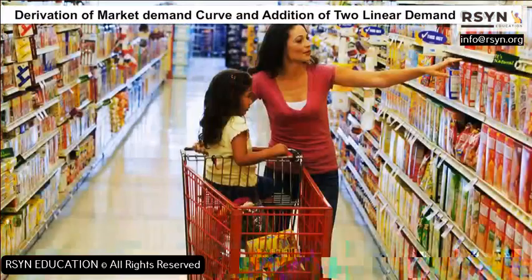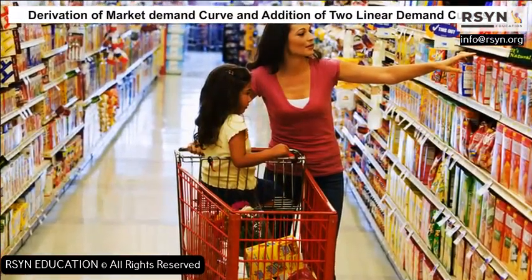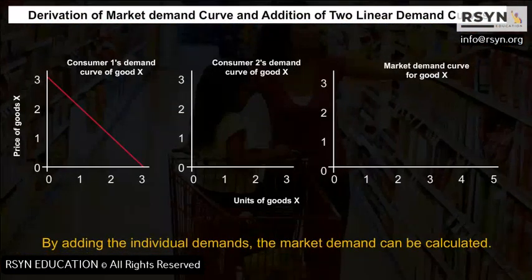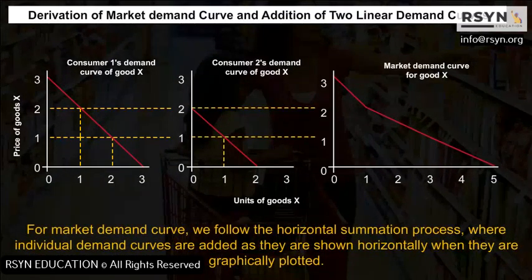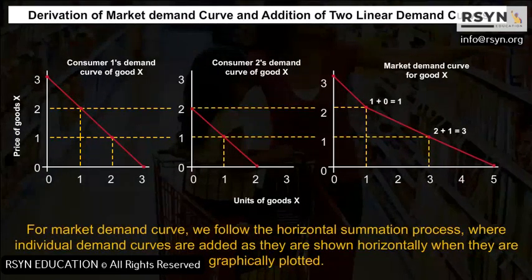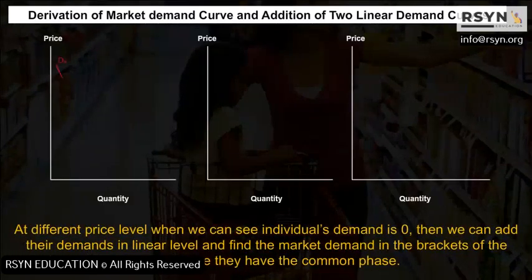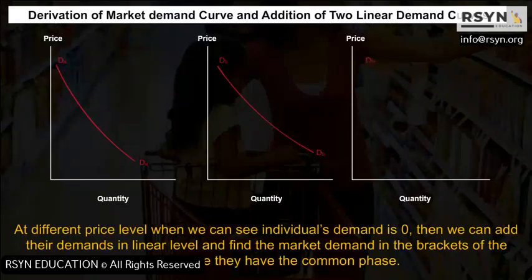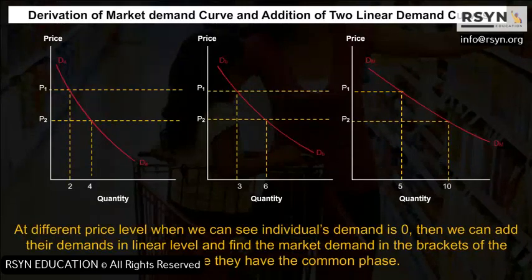Market Demand Curve: The market demand is derived by adding individual demands. For the market demand curve, we follow the horizontal summation process where individual demand curves are added horizontally as they are graphically plotted. At different price levels when individual demand is zero, we add their demands at the linear level to find market demands within the price brackets where they share a common phase.